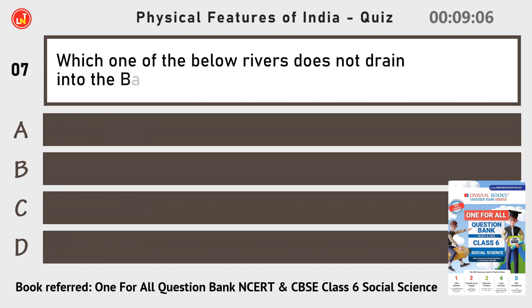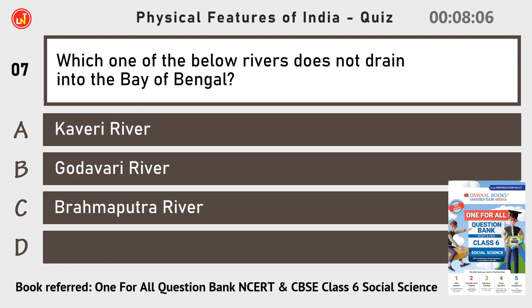Which one of the following rivers does not drain into the Bay of Bengal? The Sabarmati River.